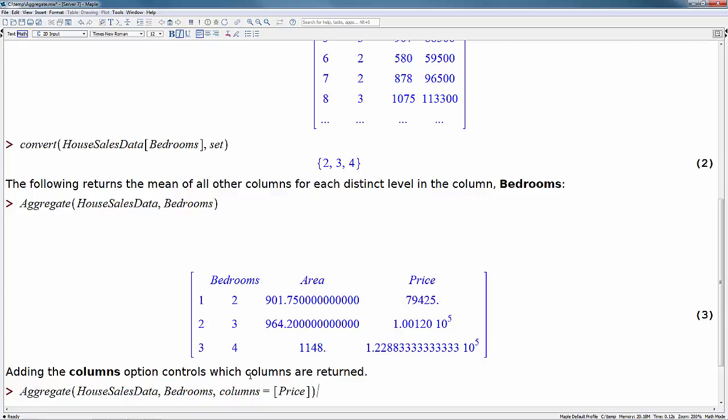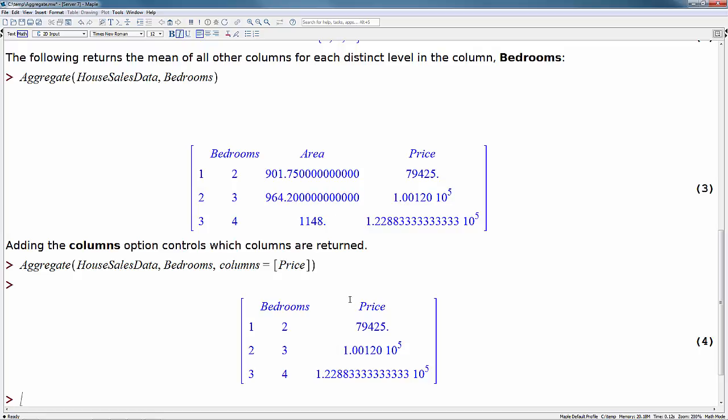If we add the columns option, we can control which of the columns are returned. So in this example, we'll just return the price column. You'll see that it's the same as what we had above, but this is just the price column. We're not returning the area column.